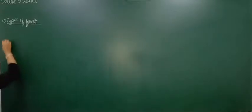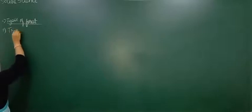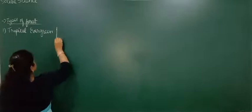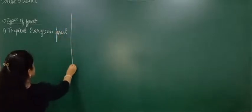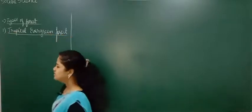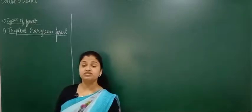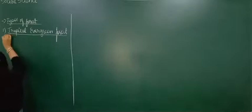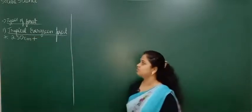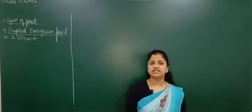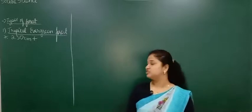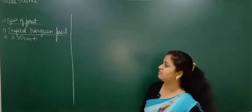The first type is the tropical evergreen forest. This forest is found in areas where rainfall is more than 250 centimetres per year — the highest rainfall areas. For example, the Western Ghats, Assam, Meghalaya, and the Andaman and Nicobar Islands — all places which receive more than 250 centimetres of rainfall — have this type of tropical evergreen forest.